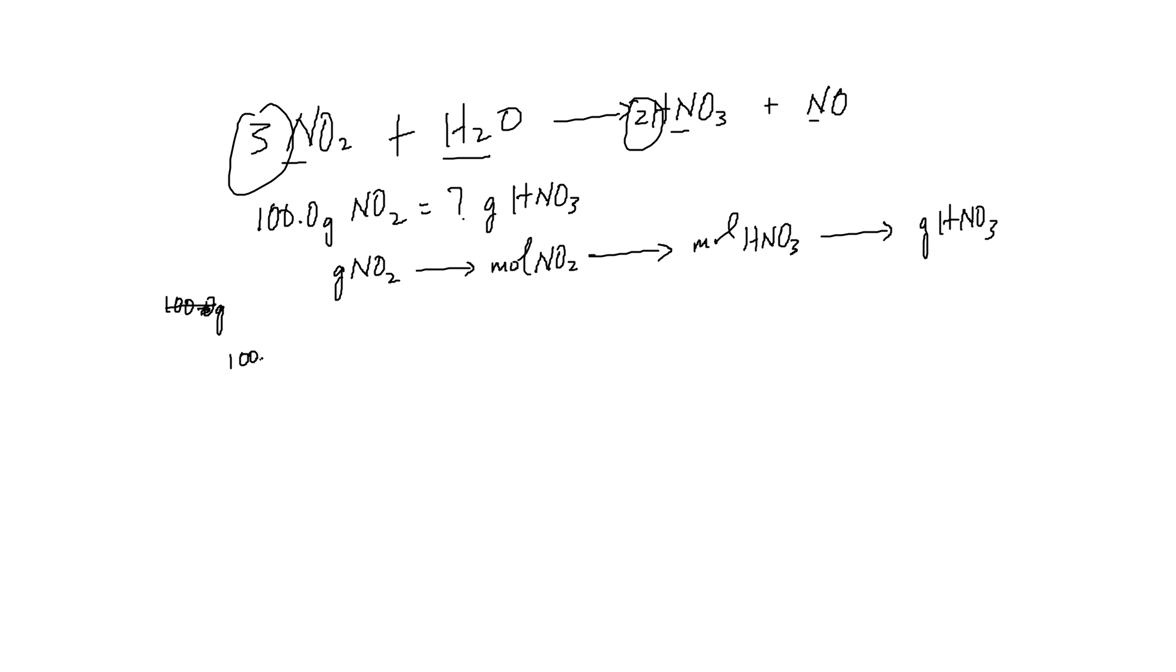So we're given 100.0 grams of NO2 to start off with. So what we will do, as I said before, we convert to moles. So in order for us to do that, we need a molar mass of NO2. So that means you have to go to the periodic table and you have to look up the molar masses of nitrogen and oxygen and add them up according to the formula. So nitrogen is 14.01 and oxygen is 16.00 times 2. So the answer I got for the molar mass of NO2 is 46.01 grams of NO2. So these units will cancel out. So you'll be left with moles of NO2 up to that point.